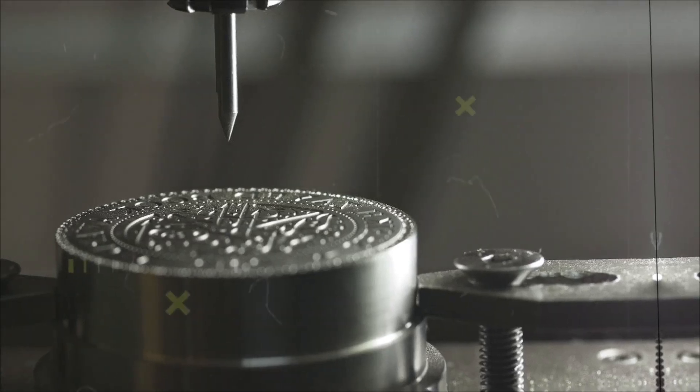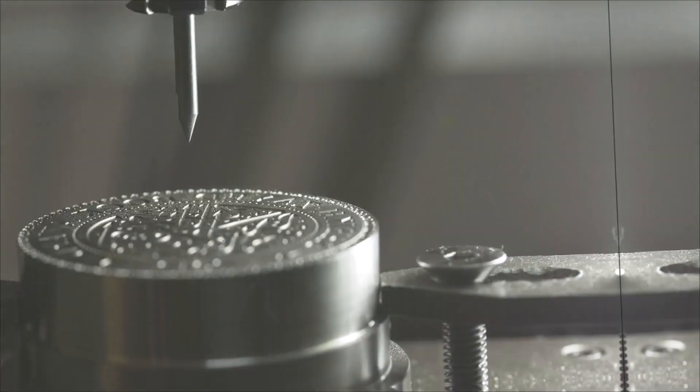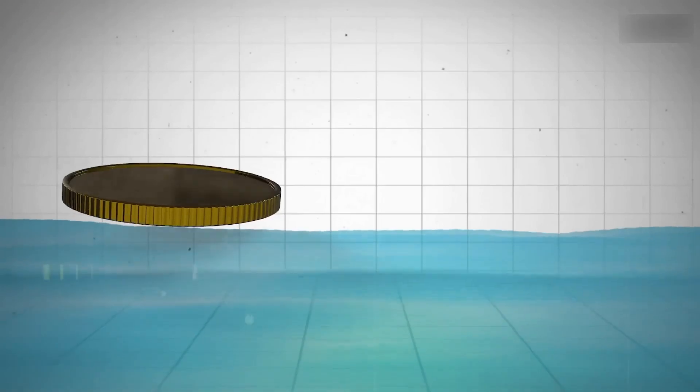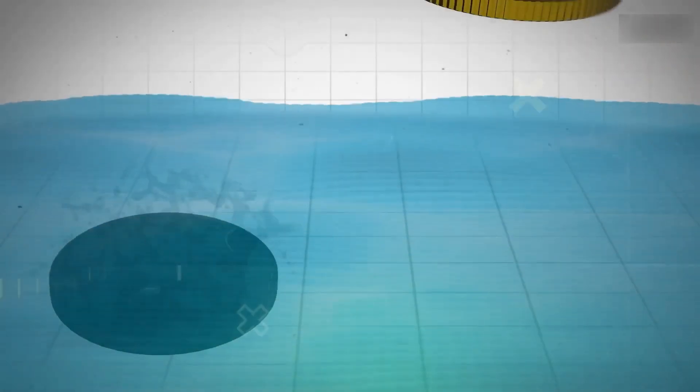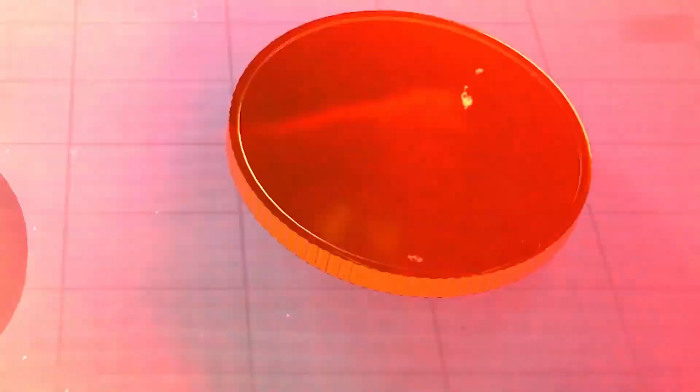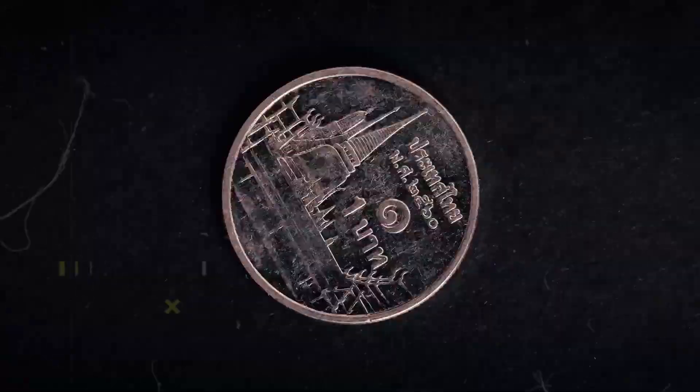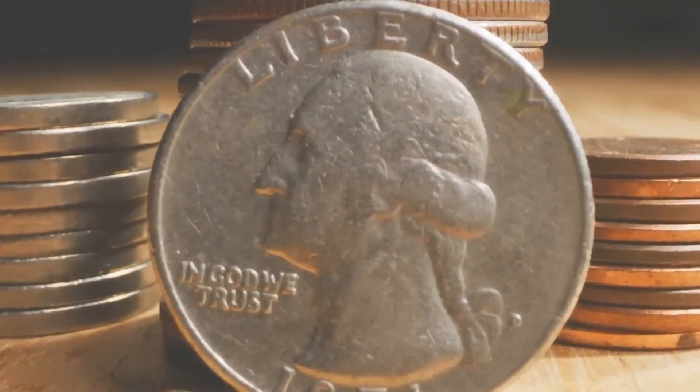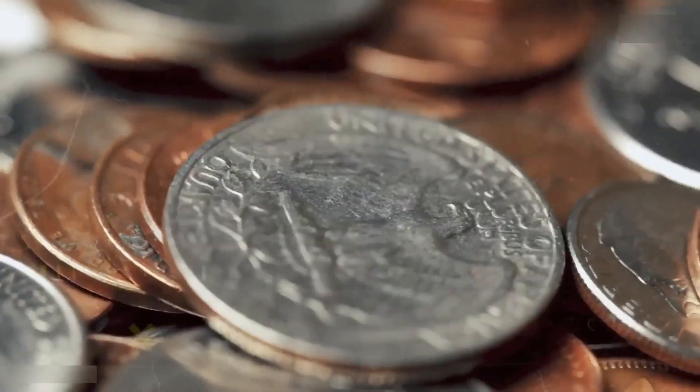That pressure isn't random; it's calibrated down to the ton, ensuring each detail dances into the metal, from the president's hair curl to the tiny year mark. Fact: a single press can strike hundreds of coins per minute. Imagine the rhythm: thwack, thwack, thwack. Each coin bursting into existence with bright, crisp design.